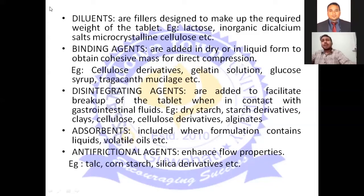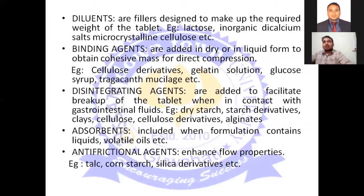Next are binding agents. For the preparation of tablets, to adhere each and every granule together, we require binding agents. They are added in dry or liquid form to obtain a cohesive mass. For direct compression we use dry binding agents, and for wet granulation we use liquid binding agents. Examples are cellulose derivatives, gelatin solution, glucose syrup, and mucilage.